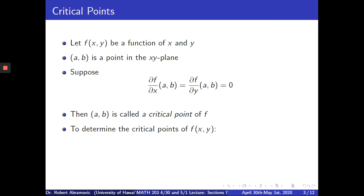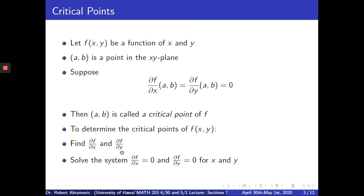To determine the critical points of a function of two variables, the first step is to find the first partials of f — one with respect to x, the other with respect to y. The second step is to solve the system df/dx = 0 and df/dy = 0 for x and y. This is usually a system of two equations and two variables. We'll get values for x and y — sometimes more than one — and those will be used to determine the critical points. We'll see an example of that in the next slide.